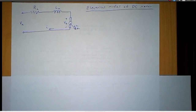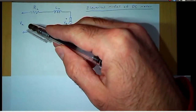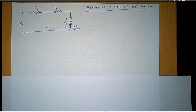We'll use what we learned in the previous video to come up with some equations describing the behavior of a DC motor. What we want is to relate our input voltage VA to the motion of the motor. So we're going to look at an electrical model of the motor and also a mechanical model of the motor and combine those in order to come up with our equations.